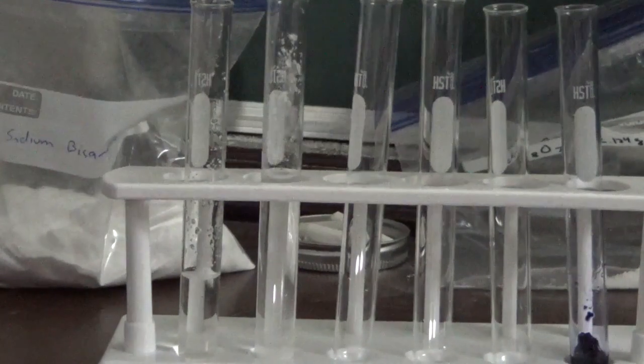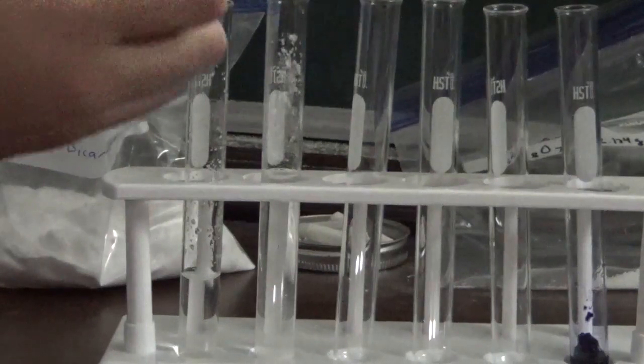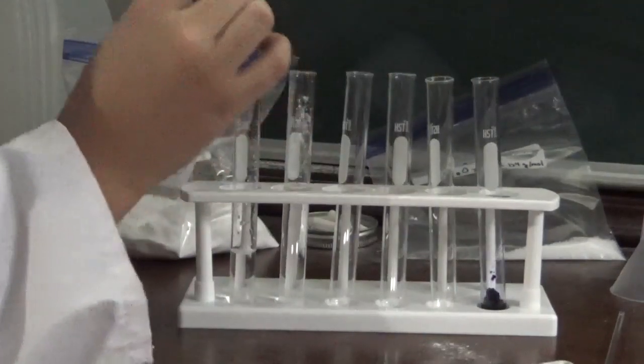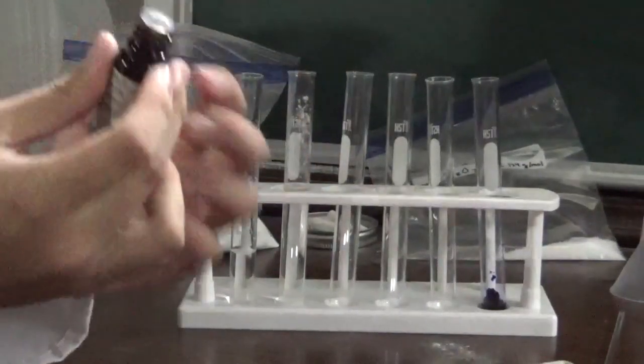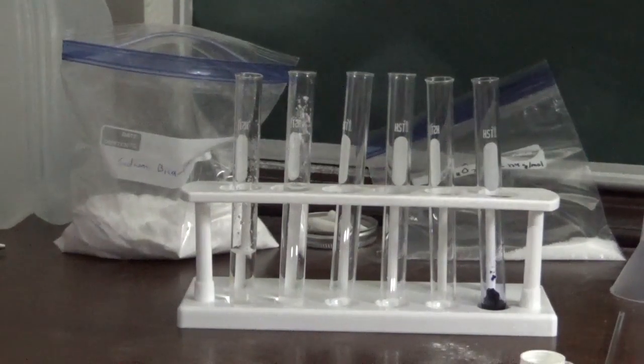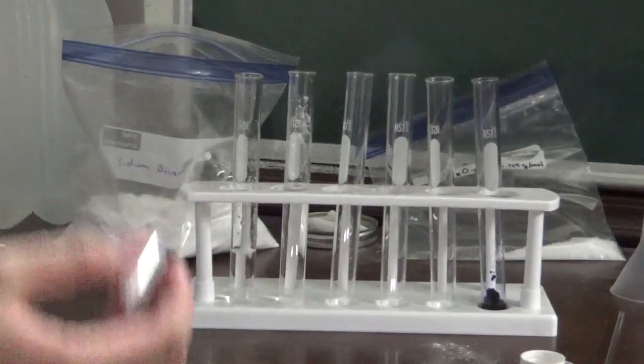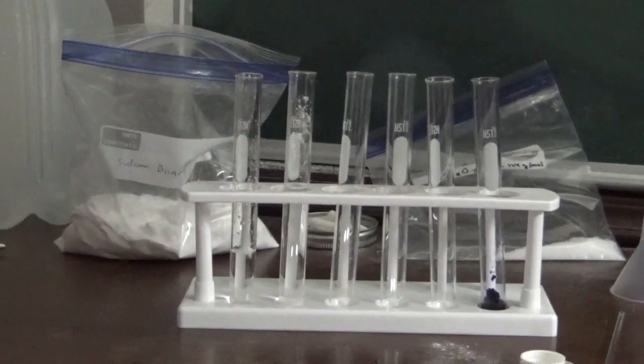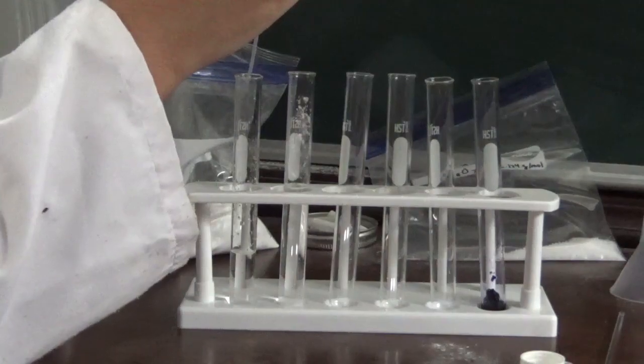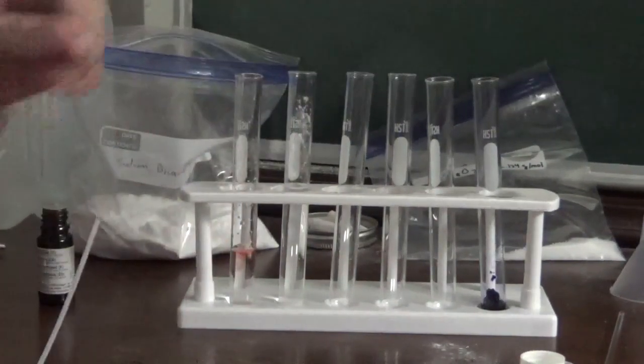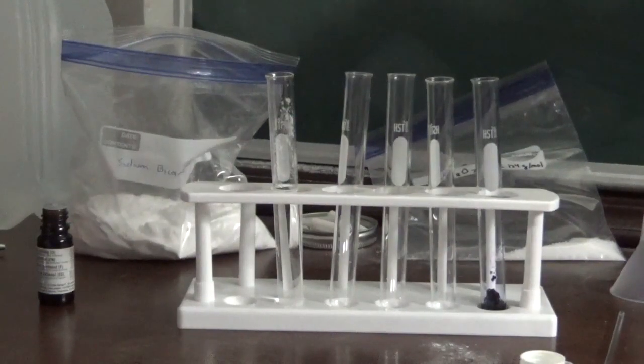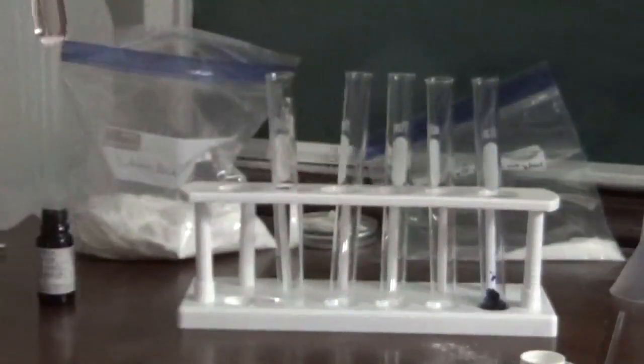And now, if we take our litmus solution, we can observe what happens when we add it to the different test tubes. Here we go. First is our acid solution. All right, I don't know how to get this stuff out. Yeah, so, oh, I guess that's how you do it. Okay, well, I have some litmus solution in this pipette. There we go.